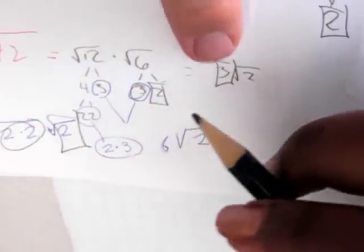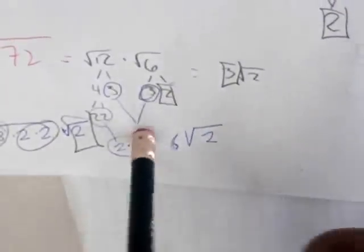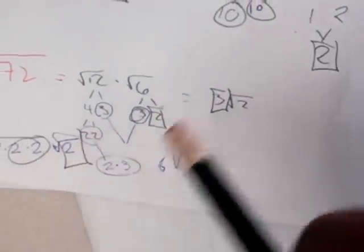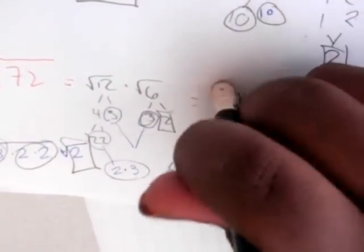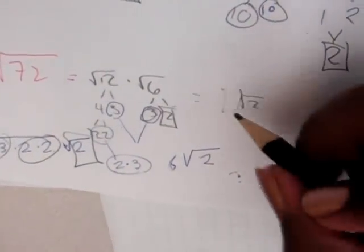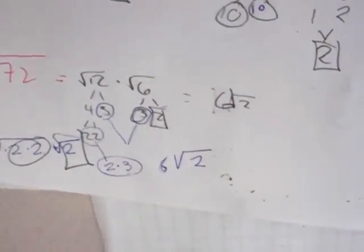Oh wait, sorry. You just have to make that a 6. Make that a 6 because 3 times 2. Yeah. There was a 2 left. That's it. Good. Thank you.